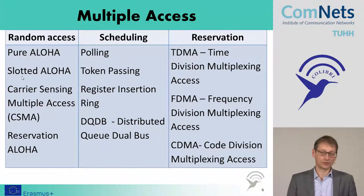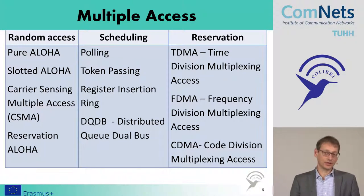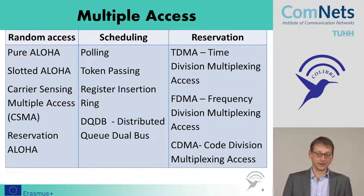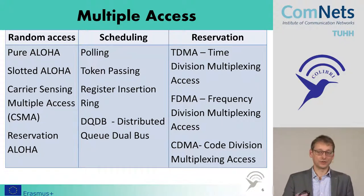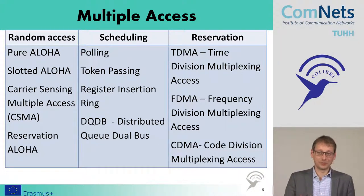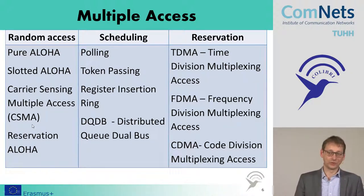You can improve that by adding time slots — slotted ALOHA. In the Hawaiian system, a beacon provided timing, and everyone was only allowed to transmit at the beginning of a beacon slot, reducing collision probability and doubling the achievable data rate. In some systems you can improve utilization substantially by being polite: listen to the channel before you transmit. That's carrier sense multiple access — sense the carrier first, then access. It's used in Ethernet and also in wireless LAN.